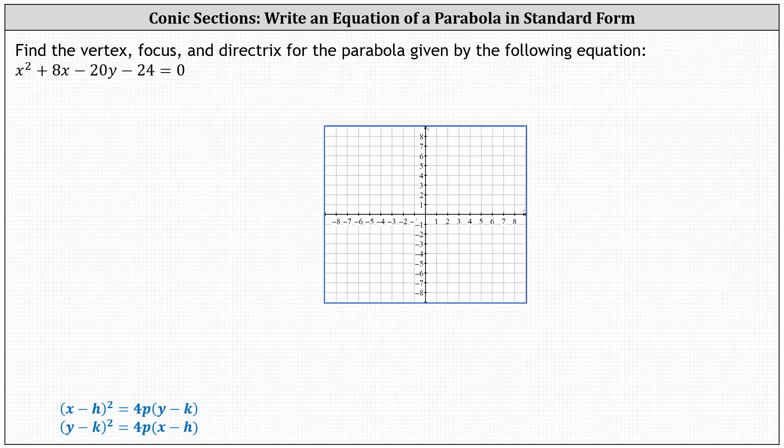We're asked to find the vertex, focus, and directrix for the parabola given by the following equation: x squared plus 8x minus 20y minus 24 equals zero. To find the vertex, focus, and directrix, we'll write the equation of the parabola in standard form, which is one of the two forms shown below.